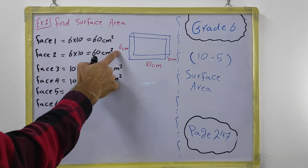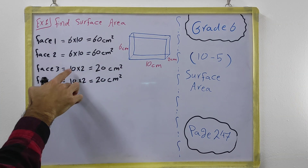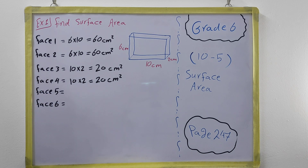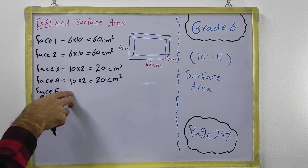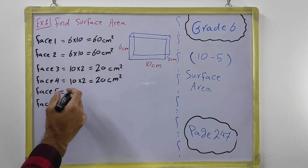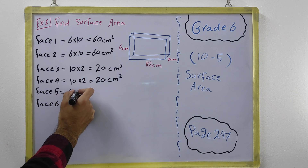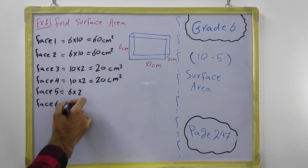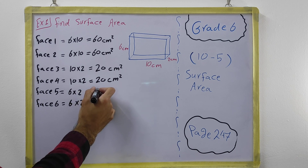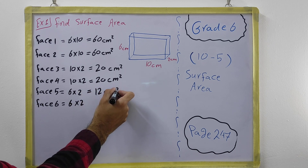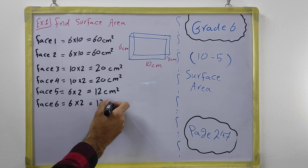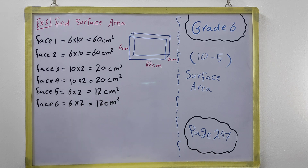We used 6 and 10 for the first pair, 10 and 2 for the second pair, and for the last two faces we use 6 and 2 — 6 times 2 equals 12 cm².